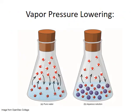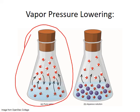Let's start with vapor pressure lowering. Remember that the vapor pressure of a liquid is the pressure of the gas phase above the liquid when the rate of evaporation and condensation are in equilibrium with each other. This flask on the left depicts the dynamic equilibrium state for pure water. Notice the arrows pointing in each direction — these represent equal rates of evaporation and condensation, and that leads to a steady state pressure of water vapor over the liquid in the sealed container.